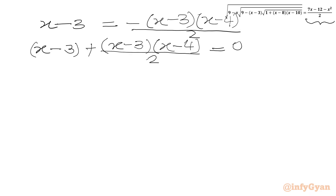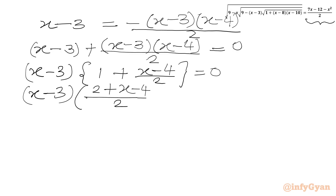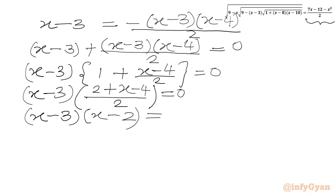Now we can take x minus 3 common. In the bracket we write 1 plus x minus 4 over 2, which equals zero. Simplifying the curly bracket: x minus 3 times 2 plus x minus 4 over 2 equals 0. So we get x minus 3 times x minus 2 over 2 equals 0. Using the product-zero rule, we get two solutions: x equals 3 and x equals 2.